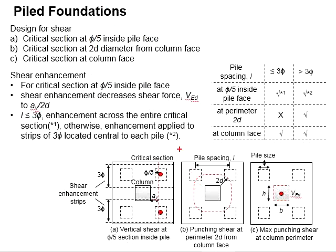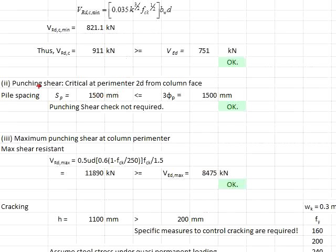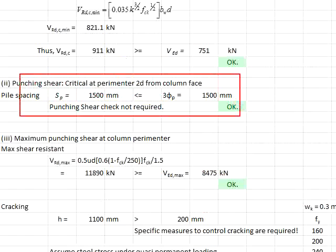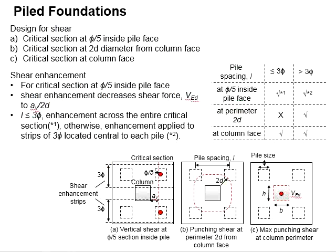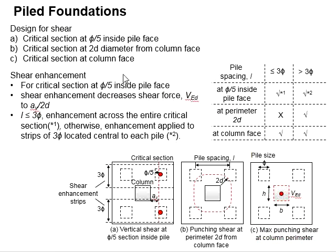Next, check for punching shear at 2d. Since the pile spacing is less than or equal to three times the pile size, you do not need to check for punching shear at 2d. Therefore punching shear at this perimeter is not required. Next, check for punching shear at the column perimeter.